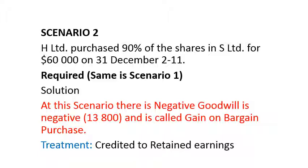Scenario 2: H Limited purchased 90% of shares in S Limited for $60,000. The required analysis of equity and statement of financial position shows a negative goodwill of $13,800. This negative goodwill — or gain on bargain purchase — is credited to profit or loss under other income.